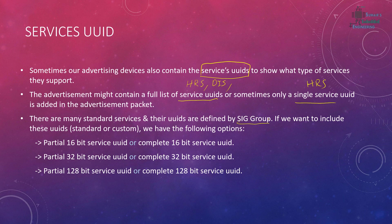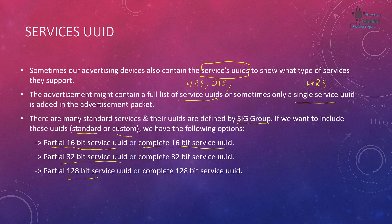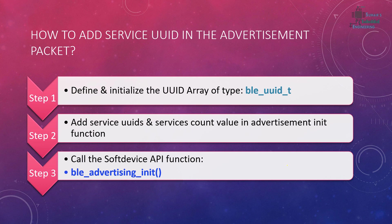There are many standard services with UUIDs defined by the SIG group, available on their website. When including UUIDs in the advertisement, you have several options: a partial 16-bit service UUID, a complete 16-bit service UUID, a 32-bit option, or a full 128-bit UUID. The choice depends on the type of application you are using.